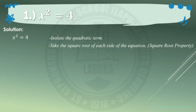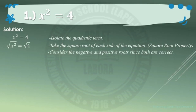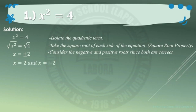Next, take the square root of each side of the equation — apply the square root property: the square root of x squared equals square root of 4. Next, consider the negative and positive roots since both are correct. So, the value of x would be positive and negative 2. That is, x equals 2 and x equals negative 2.